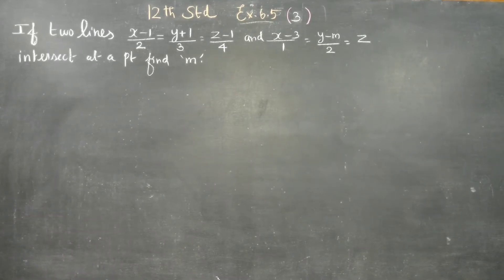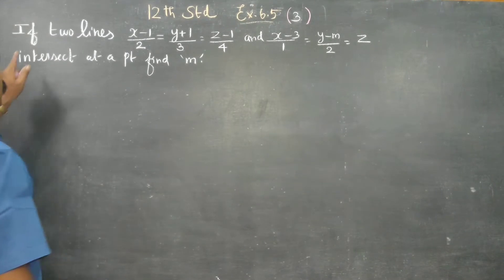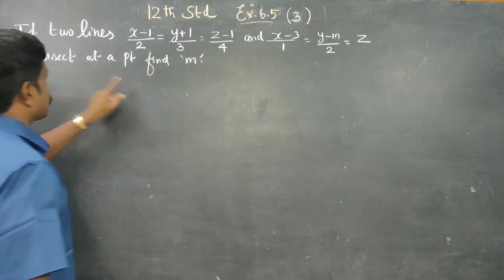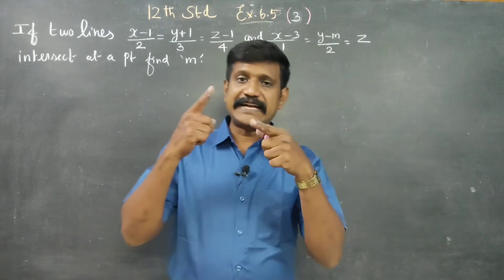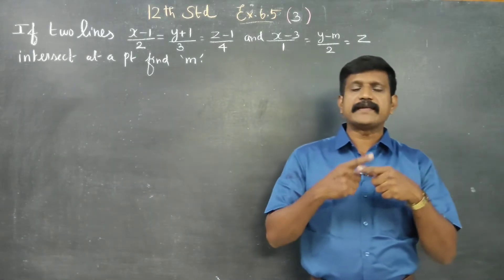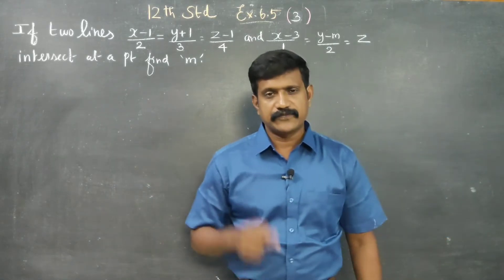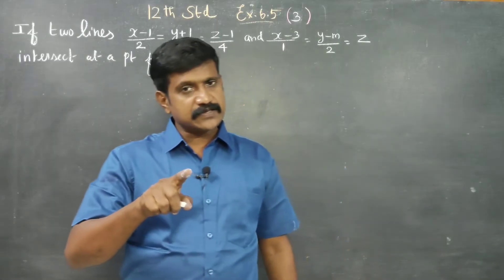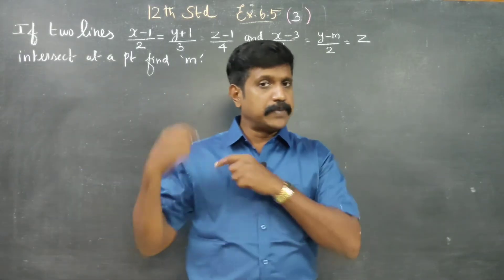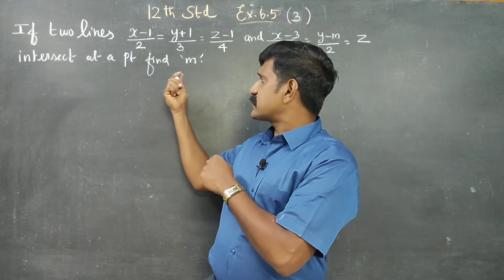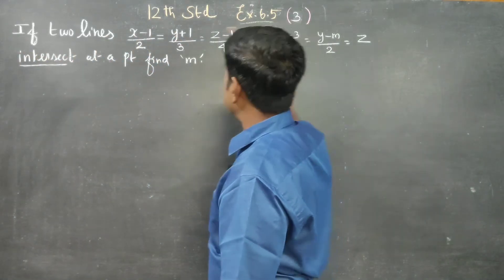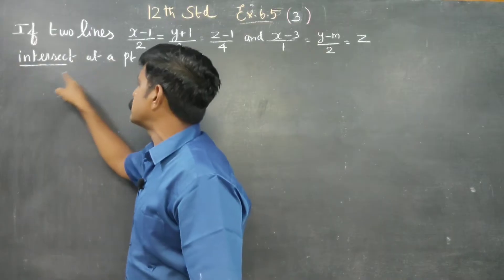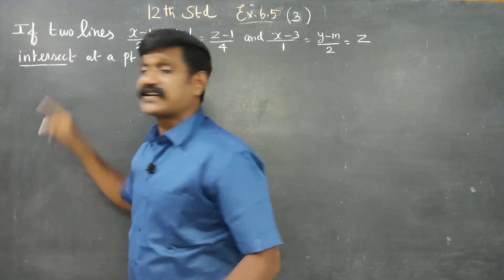Dear 12th standard students, in exercise number 6.5, sum number 3: if the two lines intersect at a point, find M. The two lines intersect at a point. Skew lines don't intersect, but in this sum, they are trying to explore the points of intersection or intersecting lines.